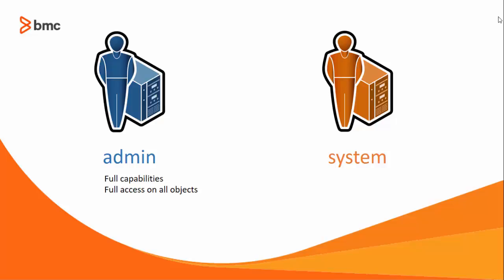When you install BMC Client Management, two administrator accounts are created by default: admin and system. The admin account is a super administrator account and has full capabilities and access rights on all the objects in BMC Client Management. The system account is a basic administrator account — it is disabled and has no capabilities or access rights. It is only used to indicate the objects that are created or operations performed by the system itself. For example, the admin user is created by the system.